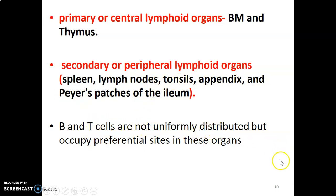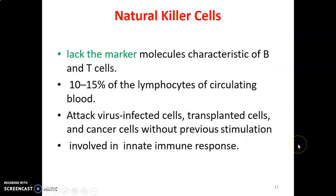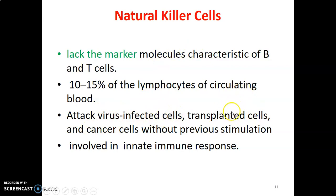T and B cells are not uniformly distributed but can occupy preferential sites in these organs. Natural killer cells are lymphocytes but they lack marker molecules — T and B cells have specific receptors that differentiate them. Natural killer cells form 10 to 15% of the circulating lymphocytes in blood. They can attack virus-infected cells, transplanted cells, or cancer cells without previous stimulation, and are therefore involved in innate immune response.